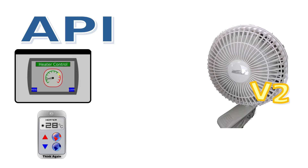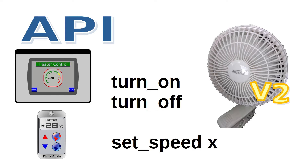Now imagine a version 2, 'Smart Fan Plus,' which adds different speed settings. The company wants to maintain backwards compatibility while also allowing devices to set different speeds. It extends functionality by adding a new command — 'set speed X' where X is the desired speed — while keeping the original turn on and turn off commands. The turn on command can set a default or restore the last speed used, so existing controllers and apps continue to work.